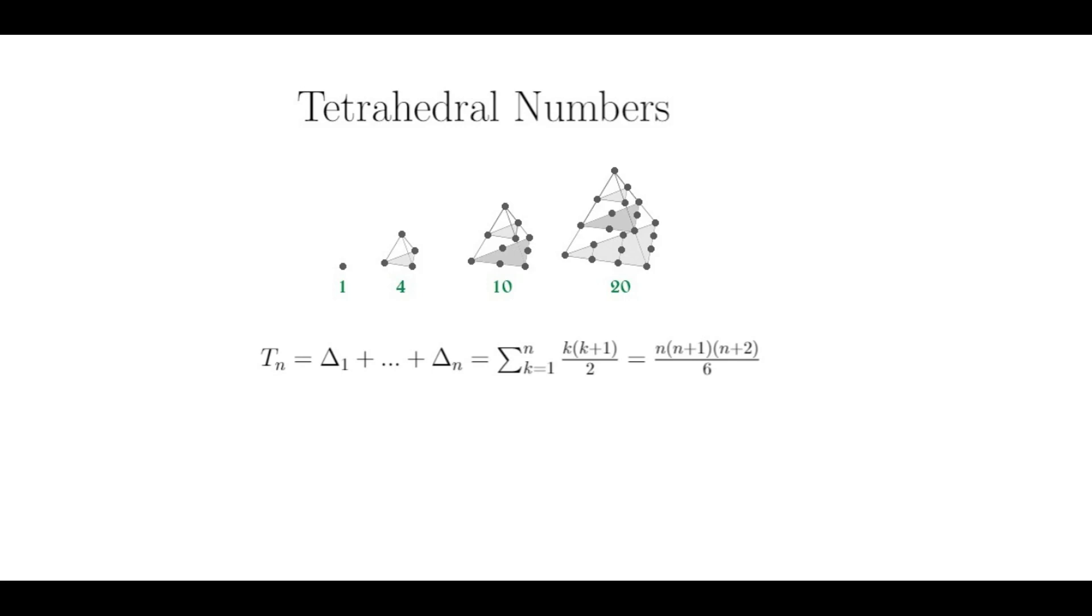Like all figurate numbers, the tetrahedron numbers represent dots or any small unit object that can be arranged in a specific pattern, in this case, a tetrahedron. However, if you notice, to get the nth tetrahedron number, all you need to do is to add together all the triangular numbers from 1 to n.